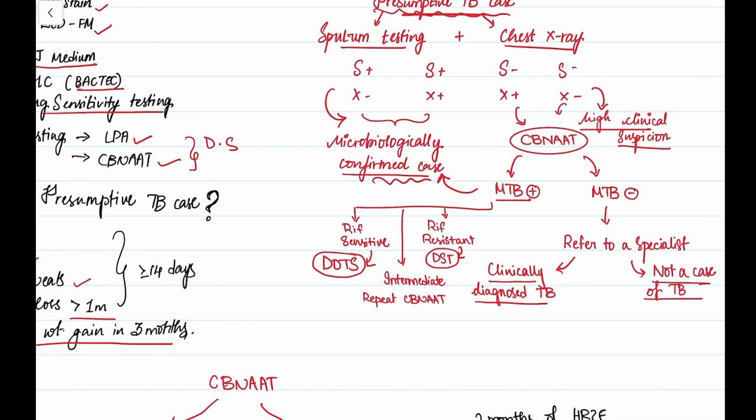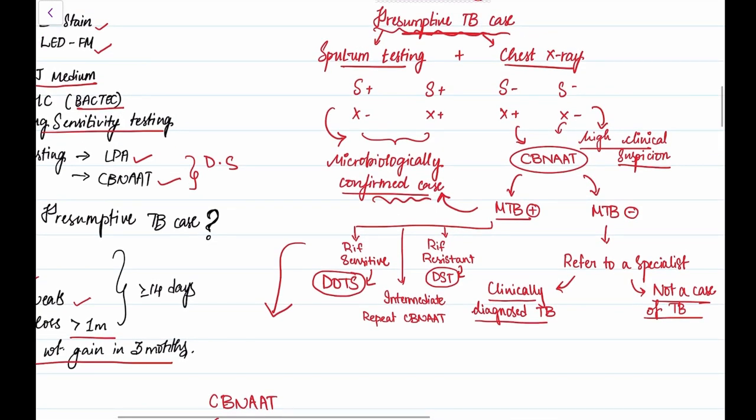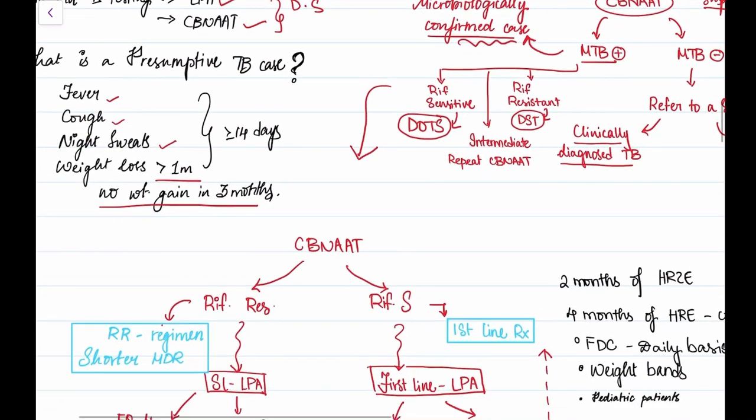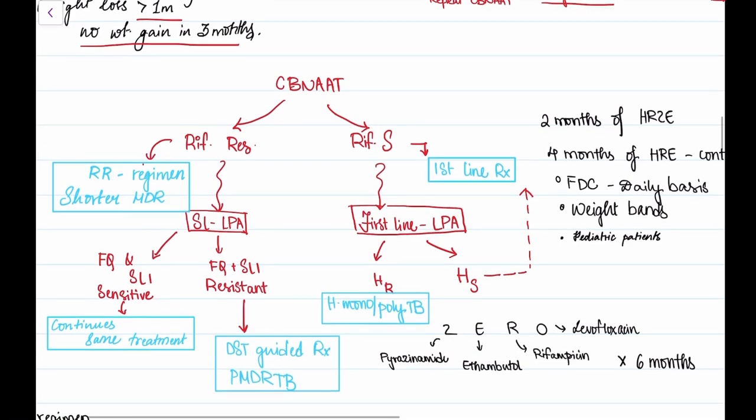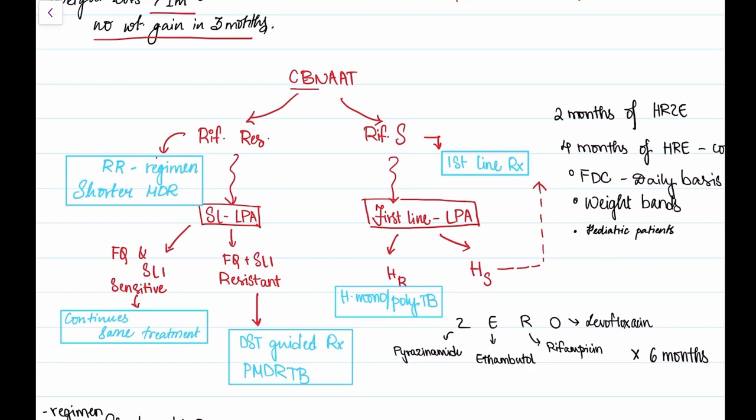Let's look into this treatment algorithm. After the diagnostic algorithm, let's now move on to the treatment algorithm. Here's the treatment algorithm. Once the MTB case is confirmed, we send them to CB-NAAT and we see if it's rifampicin resistant or rifampicin sensitive. If it's rifampicin sensitive, we give the first line treatment.